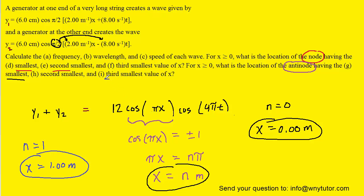And finally, for the third smallest, n could be set equal to 2, and that would allow x to equal 2 meters. And that's the correct answer to part I.